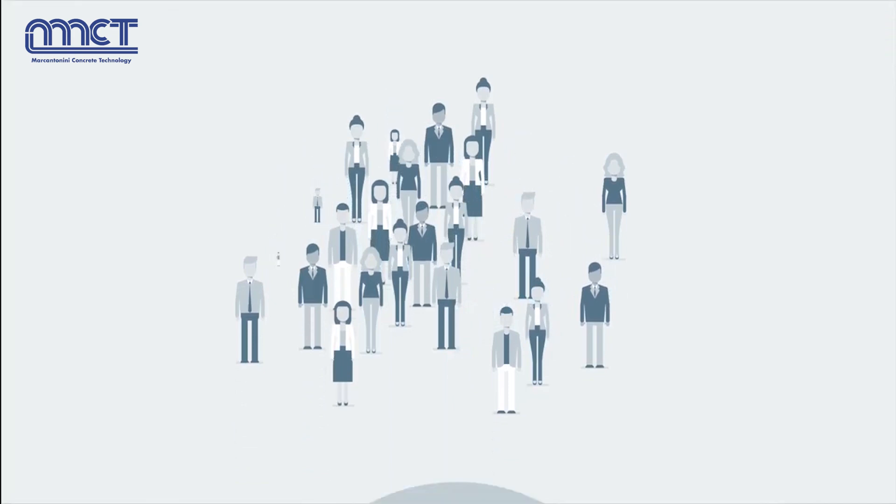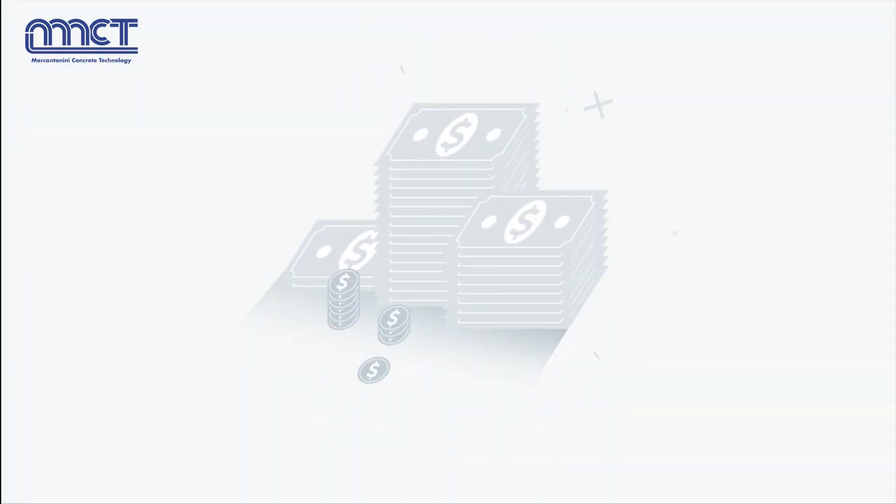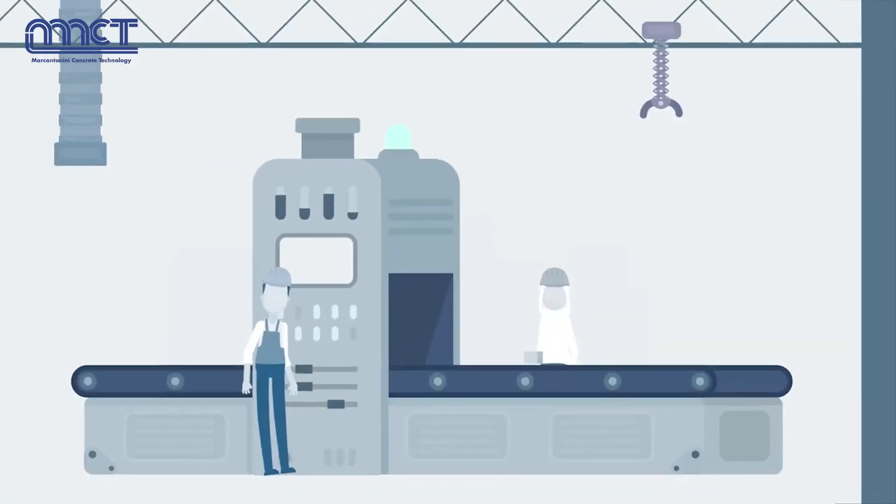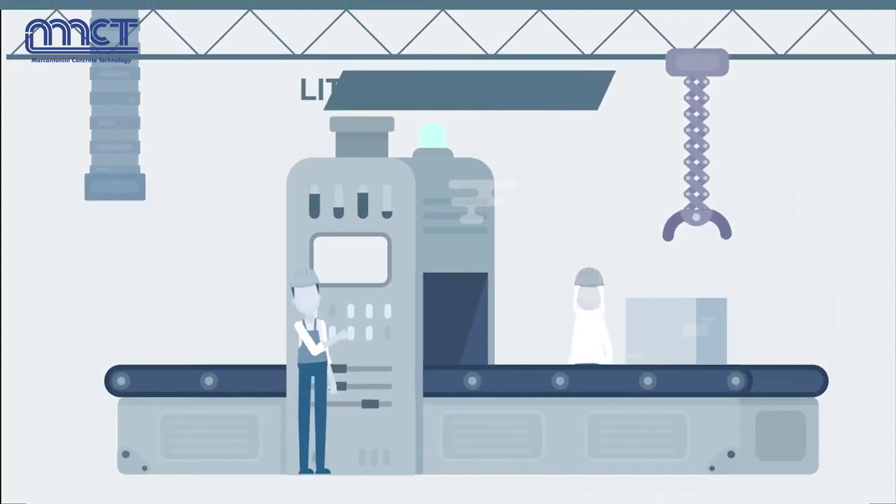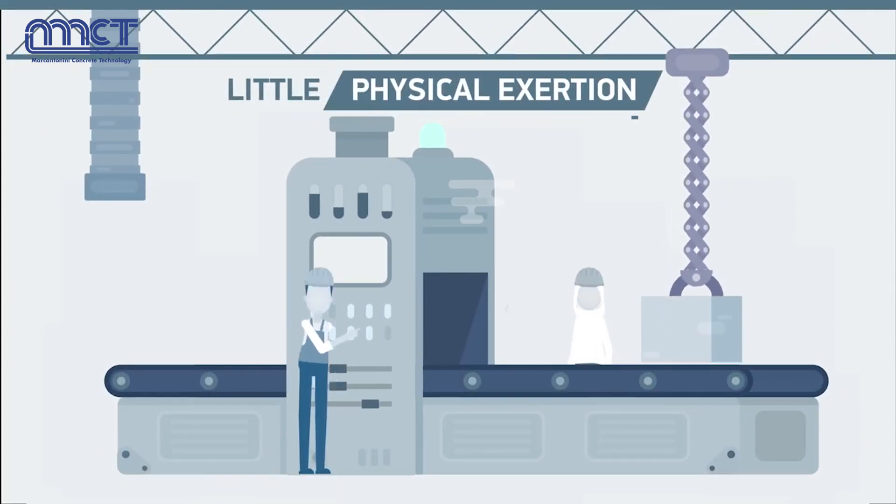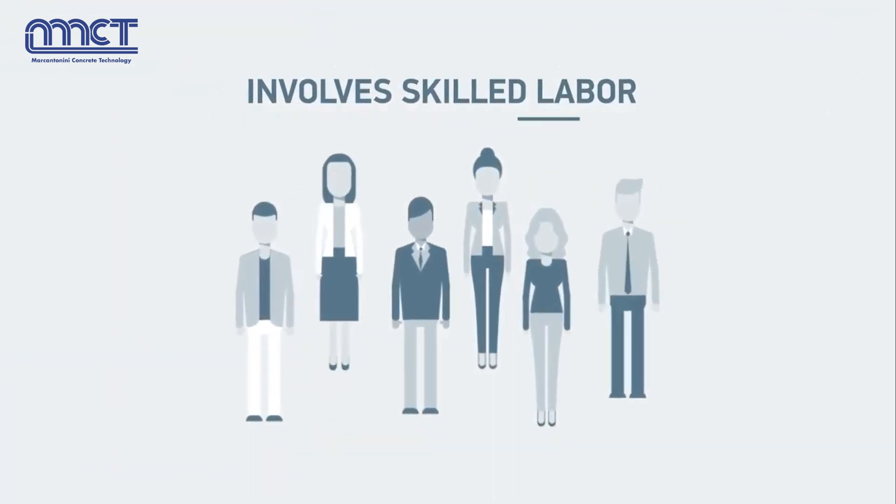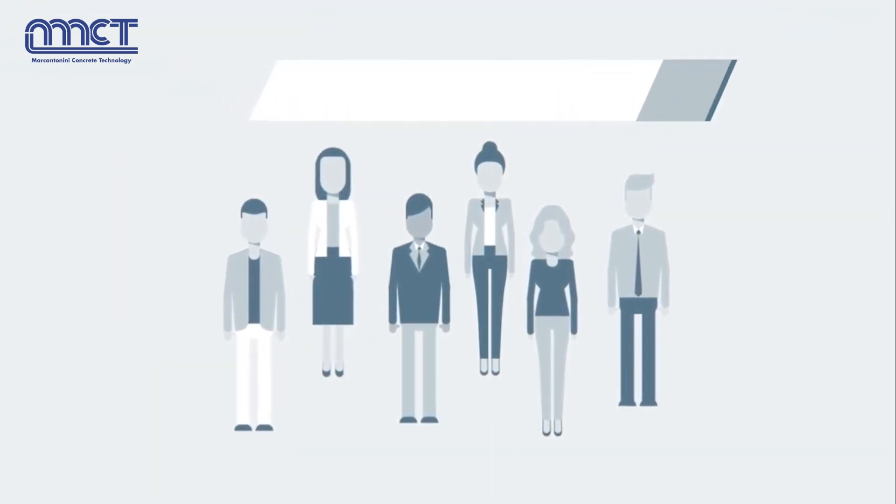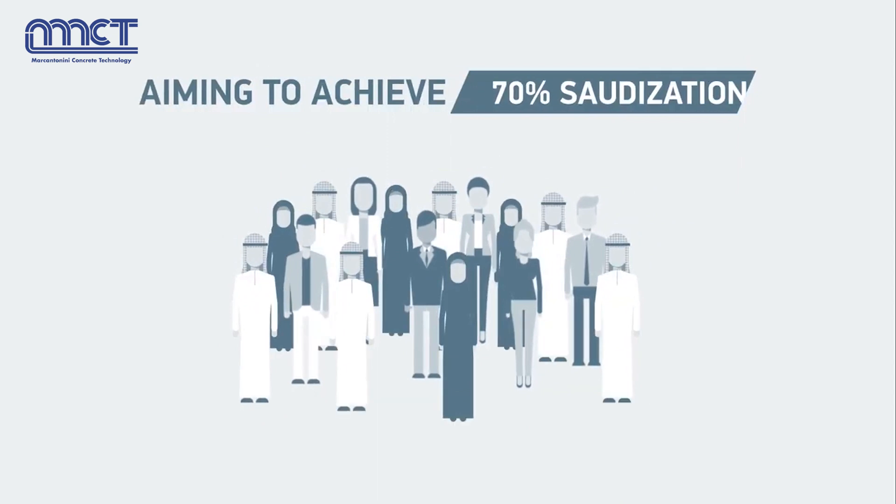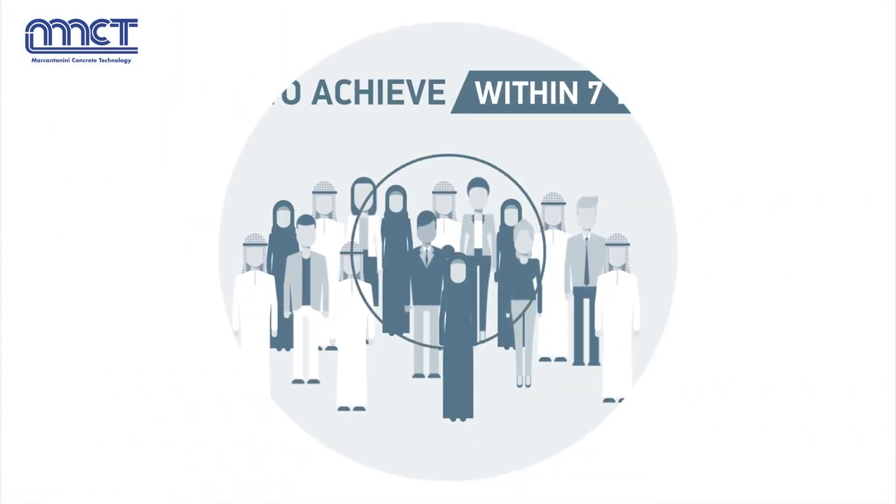Modulines also affords efficient use of human resources, cutting labor costs by a large margin where men and women can work the jobs at the automated factory with little physical exertion. The technology involves skilled labor for which AAN will provide apprentice programs aiming to achieve 70% saudization within seven years.